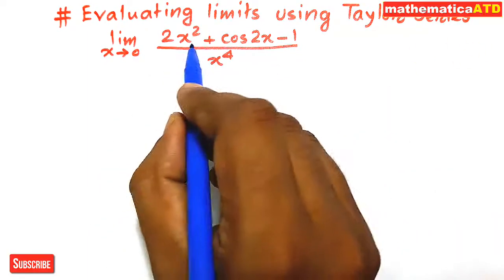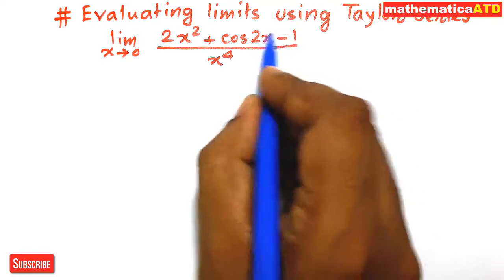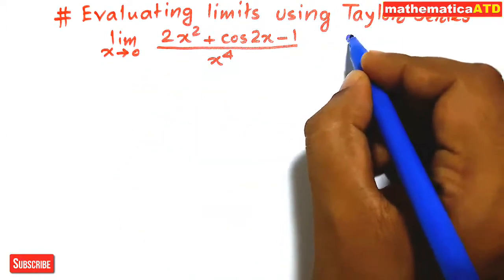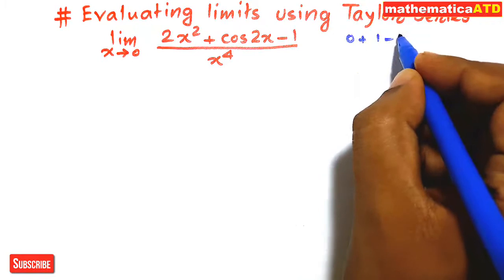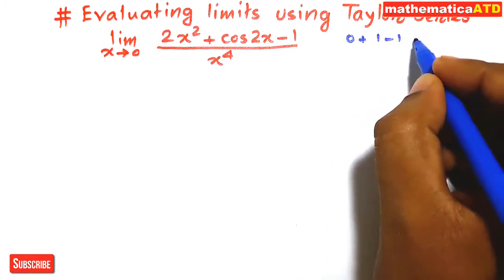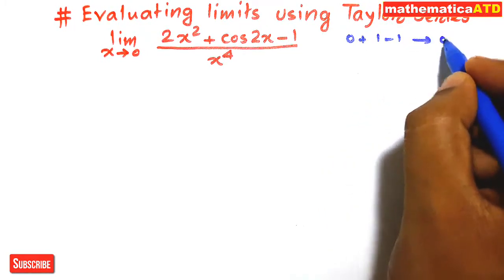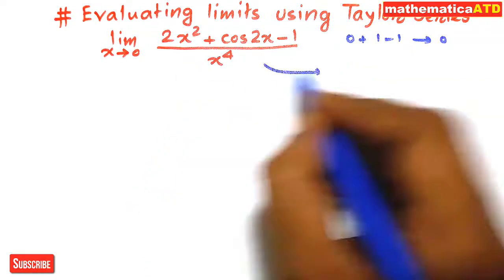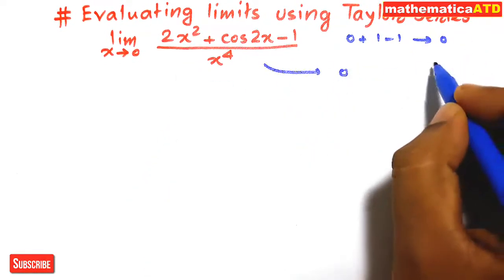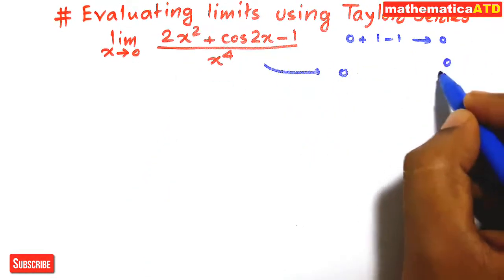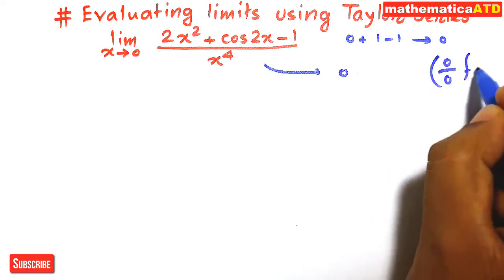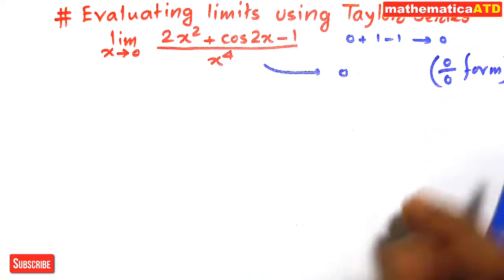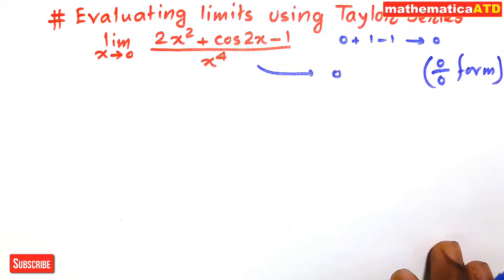If we directly put x = 0 in the numerator, we find 0 + 1 − 1 = 0, and similarly from the denominator we also get 0. So it is in 0/0 form — that is the indeterminate form.